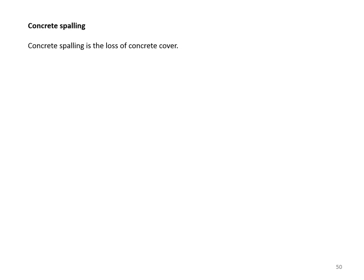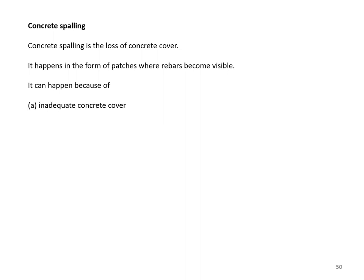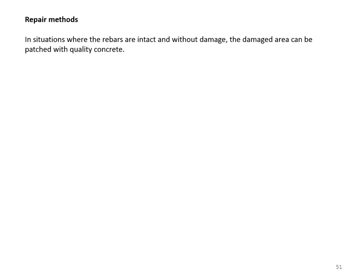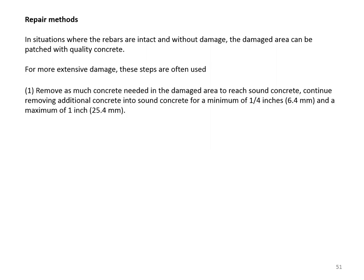Concrete spalling is the loss of concrete cover, occurring as patches where rebars become visible. It can happen because of inadequate concrete cover, corrosion of rebars which expand and put pressure on concrete, freeze-thaw cycles, or poor workmanship during construction. When rebars are intact, the damaged area can be patched with quality concrete; for more extensive damage, a multi-step repair process is used.